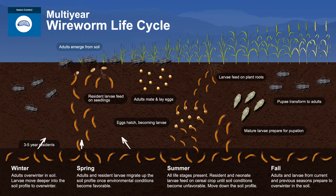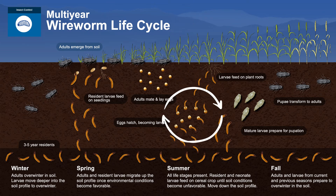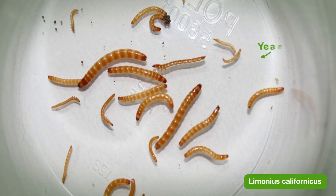The typical life cycle goes like this. Beginning with the click beetle stage, they emerge from the ground in the spring, usually in April, May, and June. They'll mate and lay eggs, and those eggs will hatch in about three weeks into what we term neonate wireworms — new wireworms, very small. The following year we term them resident wireworms because they're now resident in the soil for several years. In the case of Limonius californicus, in the first year neonates are about a quarter of an inch long.